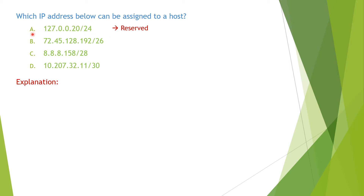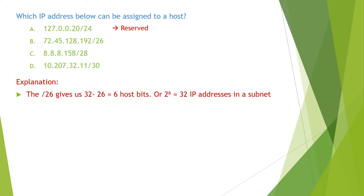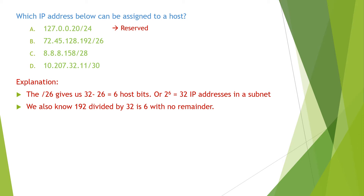Now let's look at the next address. The slash 26 gives us 6 host bits or 32 addresses in a subnet. We also know 192 divided by 32 is 6 with no remainder, so it is a network address.